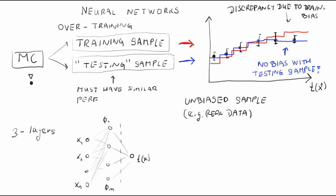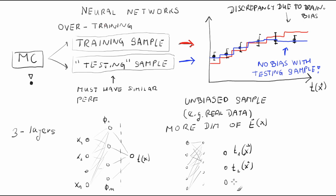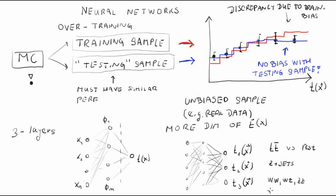One final remark: the output test statistic can have more than one component. This is useful when you need to distinguish different background processes — for example, one component discriminates tt-bar events from all the rest, a second for Z+jets, third for diboson, fourth for fakes, fifth for signal, and so on.